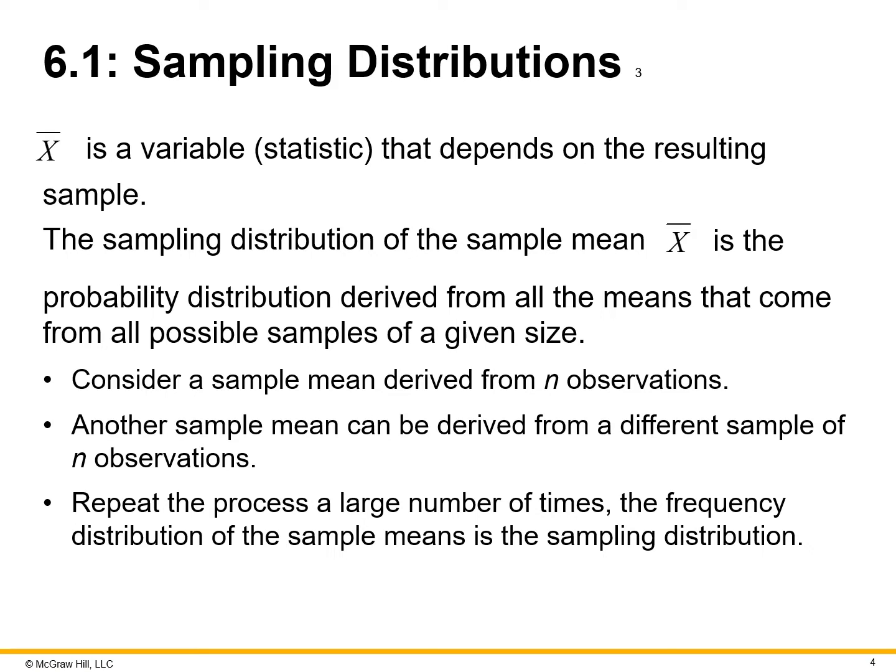Consider a sample mean derived from N number of observations. Another sample mean can be derived from a different sample of observations. In this example, groups A through E of five different customer groups, the age is the variable we're looking for on average. There could be 100 customers in group A, 75 in group B, 16 in group C, etc. Each sample has a different number of observations to take into account, and each unique customer is an observation. We repeat the process a large number of times; the frequency distribution of the sample means is a sampling distribution.